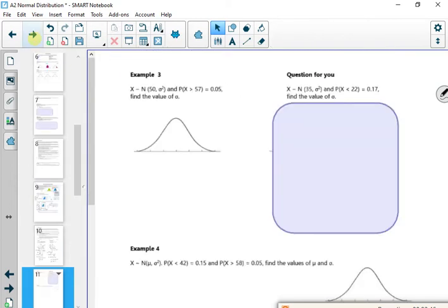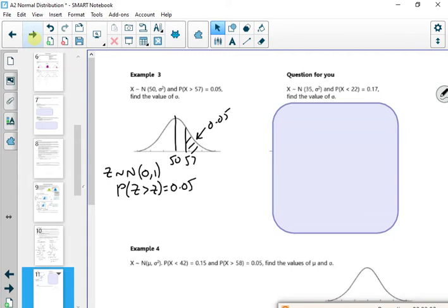Right, so what I've got here now, similar idea, but it's finding sigma. So I know that the mean is 50, I'm looking at bigger than 57, and the area is 0.05. So I'm going to switch it to z, but I want the probability that z is greater than z is 0.05. Now we did that, didn't we? That's the 1.6449. So we did that before, but I do an inverse, I do a right-hand tail, the area is 0.05.